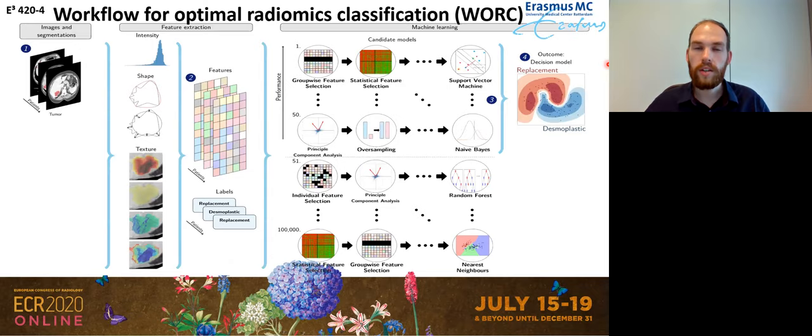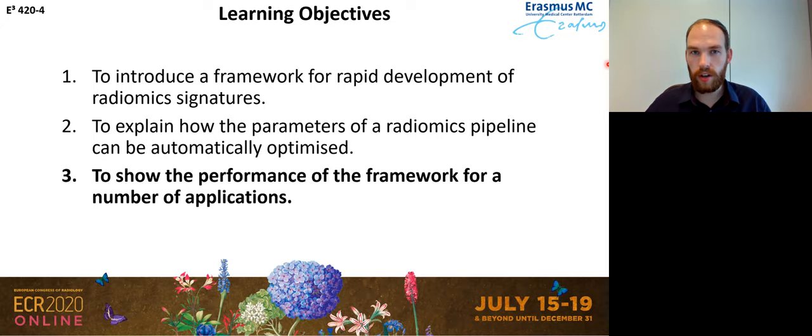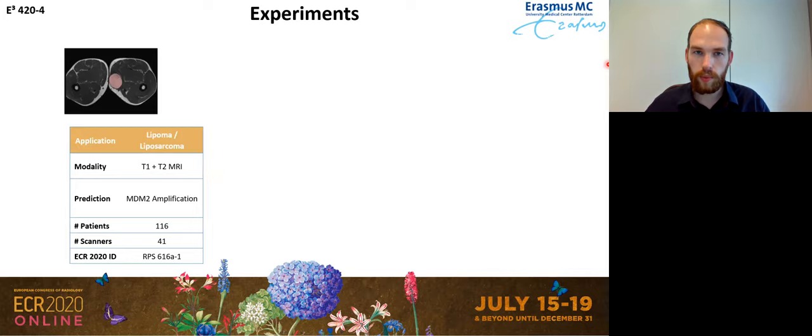This summarizes our platform — the workflow for WORC: Workflow for Optimal Radiomics Classification — where we can automatically develop a radiomic signature per application. That brings us to our third learning goal: we've made this platform, which we can use for automatic development of radiomic signatures, and I will now demonstrate its performance on a couple of applications.